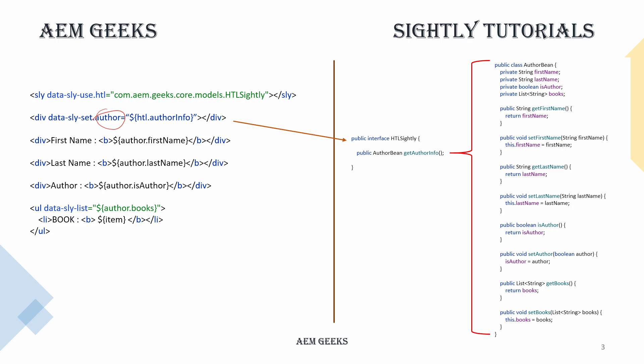The author variable contains the object of this bean. Because the bean information is not changing, every time we print these values, this variable will be used. So now I'm making only a single call to this method, whereas in the previous scenario I was making four calls. I removed at least 75% of method calls in this example, and this also helps with memory. This is how you can optimize your code using data-sly-set when you need to hold an object for further processing in your Sightly file.